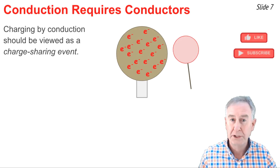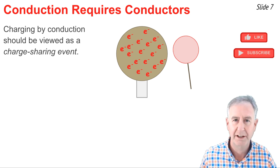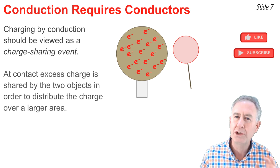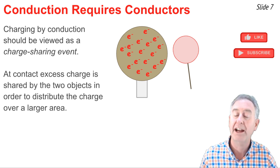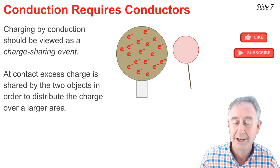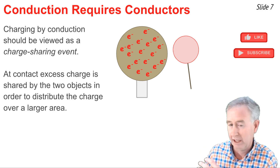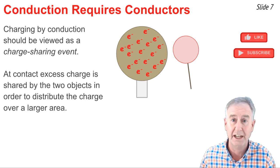The way I like to get students to perceive of charging by conduction is to perceive it as a charge sharing event. When you make contact between the two objects, what is really going on is the objects are sharing their excess charge. It distributes over the surface of the two objects. So when we look at object A, the one on the left, the larger one, that it has an excess of electrons. It has a negative charge. Object B, the neutral one, the smaller one is going to touch it here.